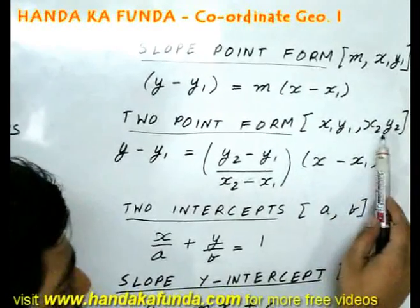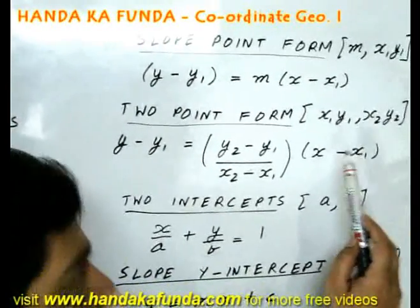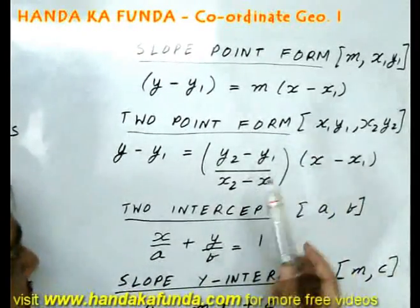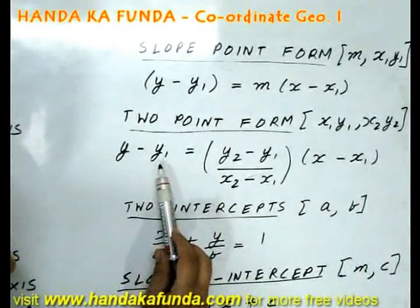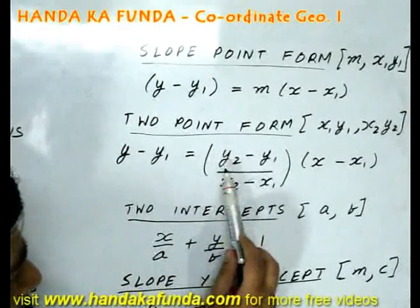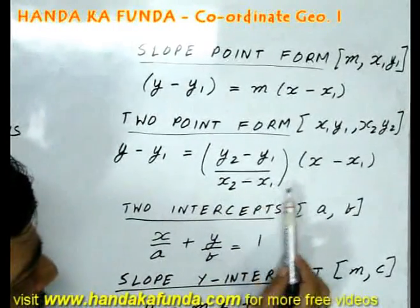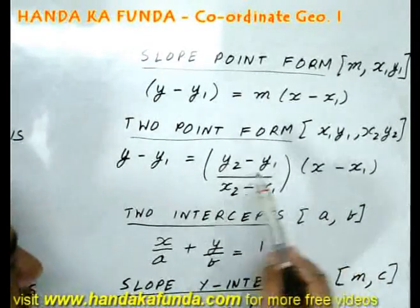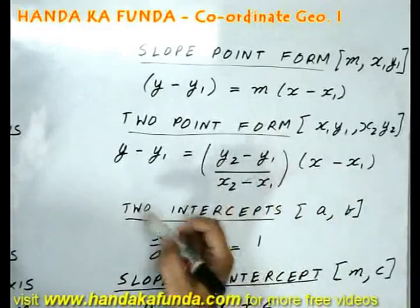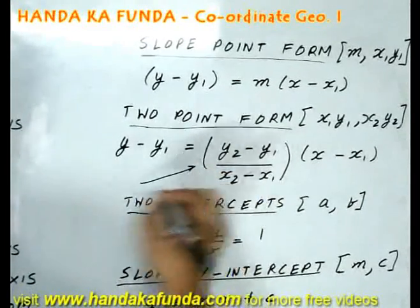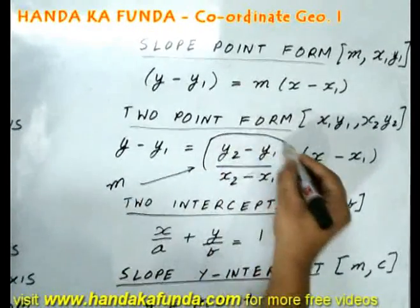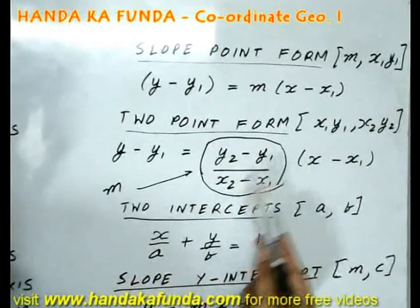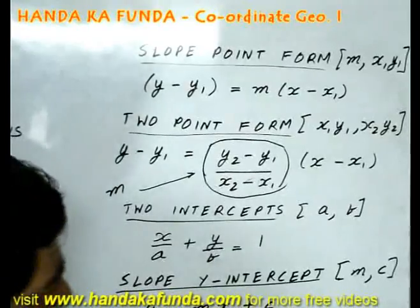If I am given two points (x1, y1) and (x2, y2), then also they will have a unique line which connects them. The equation of that line will be given by y minus y1 is equal to y2 minus y1 upon x2 minus x1 times x minus x1. What is the slope of this line? Look at, compare these two lines carefully. You will realize that the slope of this line is nothing else but the portion which I have circled, that is y2 minus y1 upon x2 minus x1.